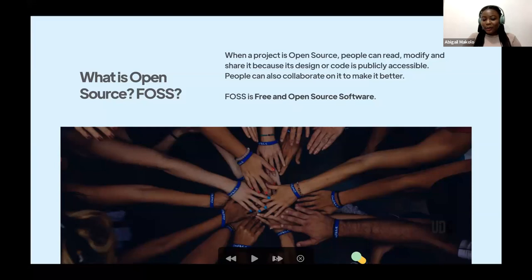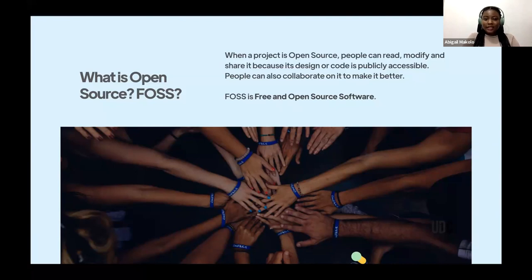What is open source? So when we say a project is open source, it means that its code, its design, everything related to it is publicly accessible. So people can read it, they can change it, they can share it, duplicate it. They can even collaborate and work together to make it better. That is the essence of open source: collaboration, teamwork, feedback, and peer review.